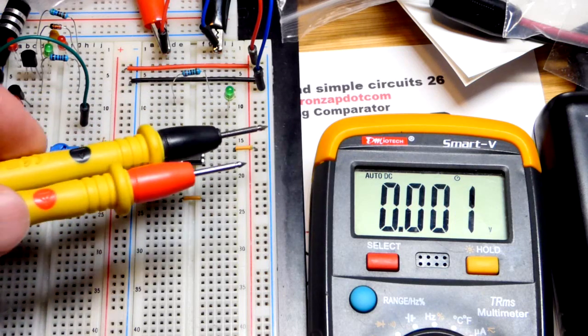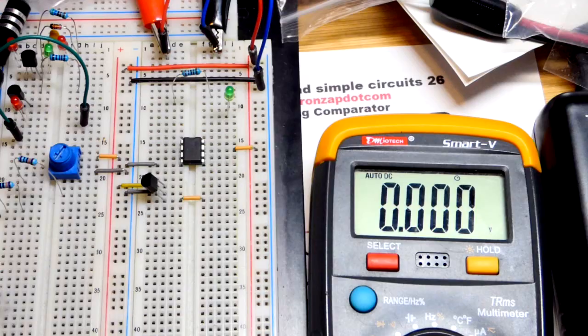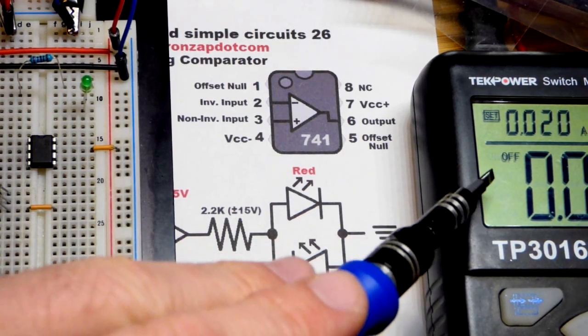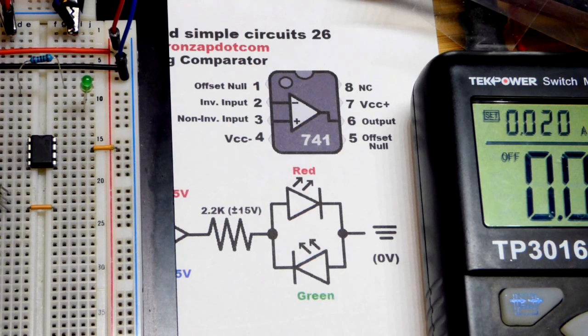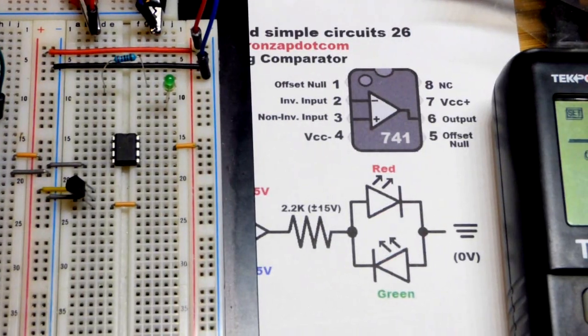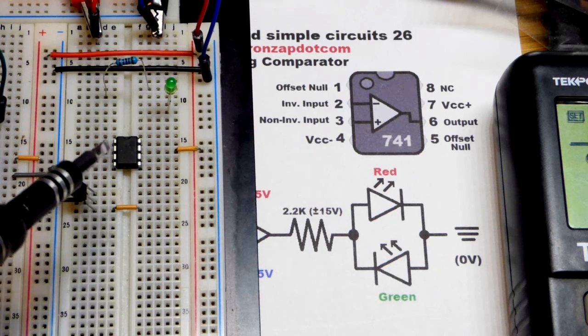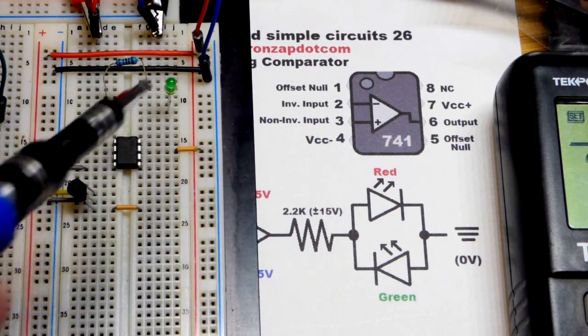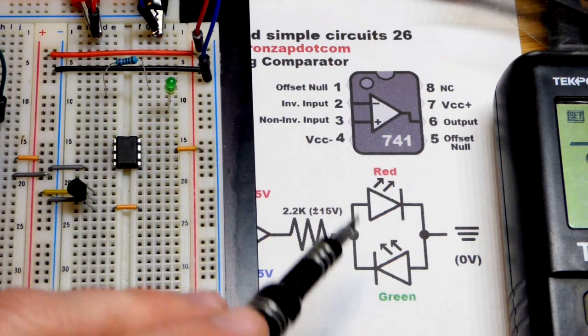And so that becomes our virtual ground halfway point for the 741 op amp. That's really about what we need because it doesn't output to the rails. And so now let's get to the actual circuitry. I'm going to turn the power supply off. It's usually better to wire things up with the power supply off. Even though sometimes you come across interesting things when you're wiring it up while it's going on. But hopefully not interesting that you destroyed a component.